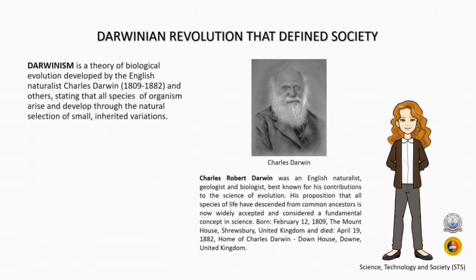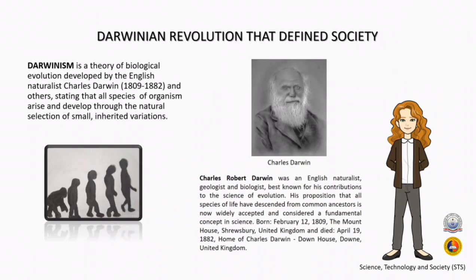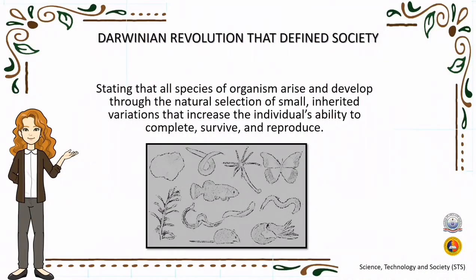Good day. Today we are going to talk about the Darwinian revolution that defined society. First, what is Darwinism or what is the Darwinian revolution? Darwinism is a theory of biological evolution developed by the English naturalist Charles Darwin, from 1809 to 1882. It states that all species of organisms arise and develop through natural selection of small, inherited variations that increase the individual's ability to compete, survive, and reproduce.